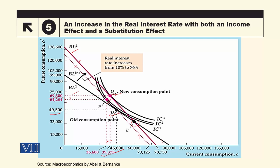D سے P پر جا رہے ہیں — substitution effect کی وجہ سے current consumption میں کمی آ رہی ہے، 45,000 سے کم ہو کر 36,600 رہی ہے۔ P سے Q پر جاتے ہیں تو current consumption میں اضافہ ہو جاتا ہے — یہ دونوں opposite direction میں move کر رہے ہیں: substitution effect کی وجہ سے current consumption کم ہو رہی ہے اور income effect کی وجہ سے بڑھ رہی ہے۔ Saving کے reference سے: D سے P پر جاتے ہیں تو saving بڑھ رہی ہے اور P سے Q پر جاتے ہیں تو saving کم ہو رہی ہے۔